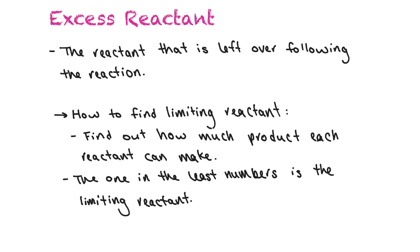The excess reactants are the ones left over following the reaction. In our sandwich analogy, you would have excess bread, tomatoes, and lettuce because salami is the limiting reactant. The way we find the limiting reactant is to determine how much product each reactant can make — just as we did with the sandwich example — and the one that produces the least is the limiting reactant.